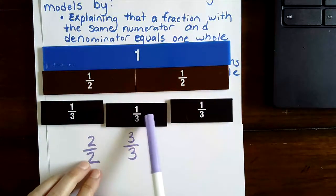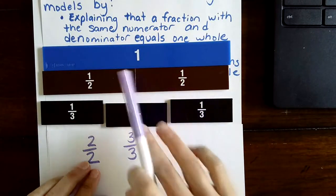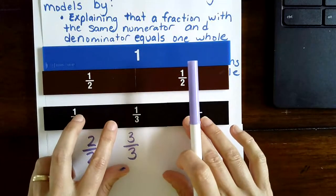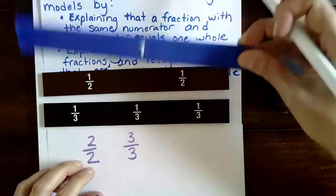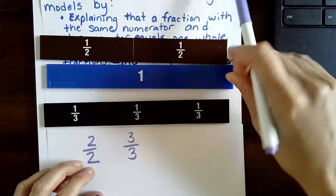And if you got three-thirds, you would have one-third, two-thirds, three-thirds, which is exactly the same amount as one whole.